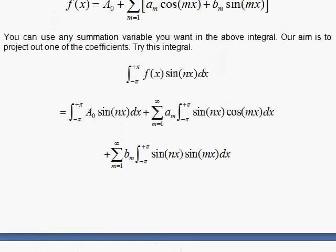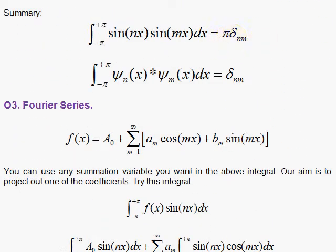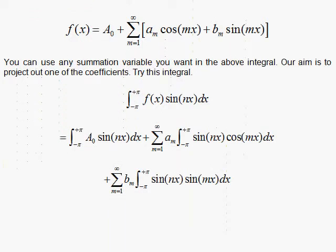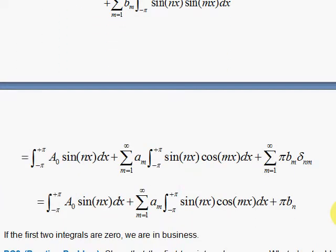And if n equals m, then you get pi. So we use that condition here, and it's the Kronecker delta symbol here, which means that when n is not equal to m, you get 0, but when n equals m, you get pi, and that will pull out the b sub n.